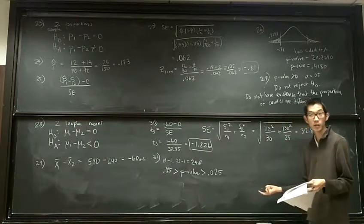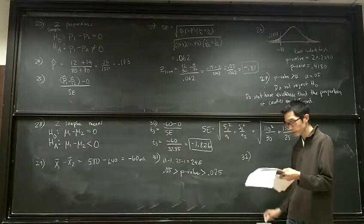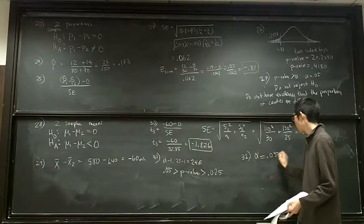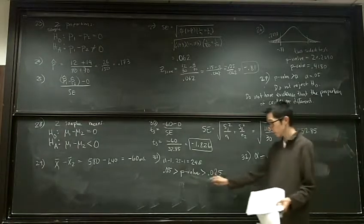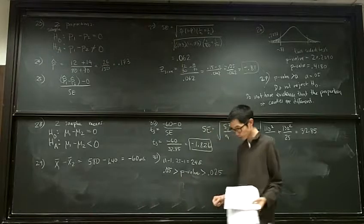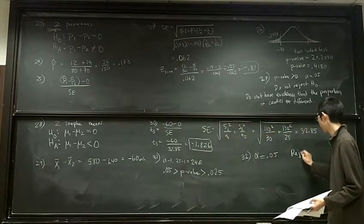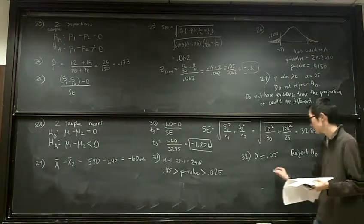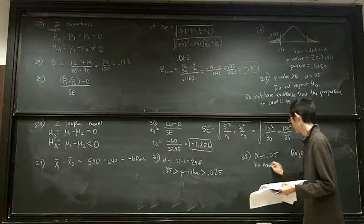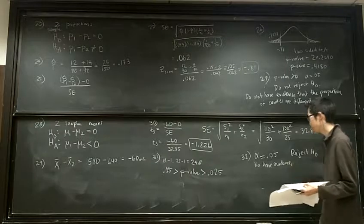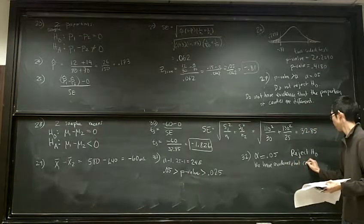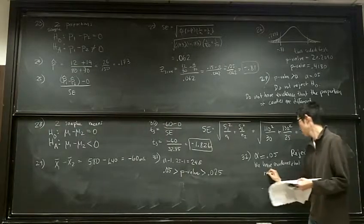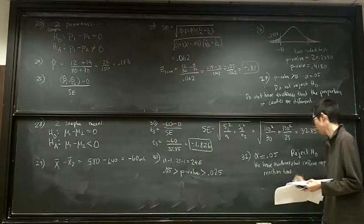Okay, that's the p-value for 31. Alright, if my alpha significance test, if alpha is .05, what's my conclusion? Do I reject or not reject? I reject. My p-value, I don't know exactly what it is, but I do know it's less than .05. So I'm going to reject the null hypothesis. And that says we have evidence that caffeine improves reaction time.